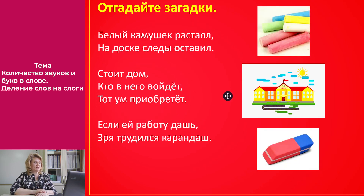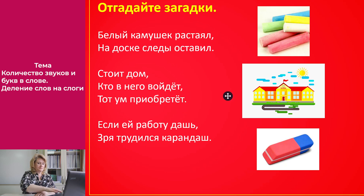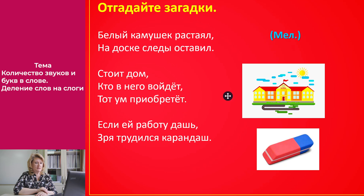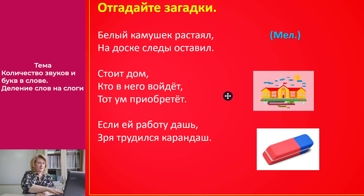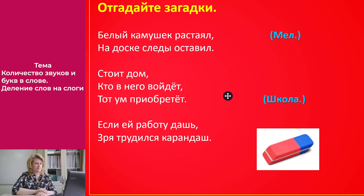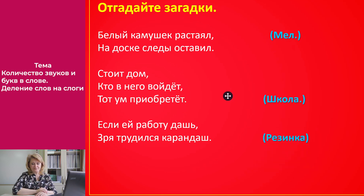Давайте отгадаем загадки. Белый камушек растаял, на доске следы оставил. Правильно, это мел. Стоит дом — кто в него войдёт, тот ум приобретёт. Это школа. Если ей работу дашь, зря трудился карандаш. Правильно, это резинка, ластик.